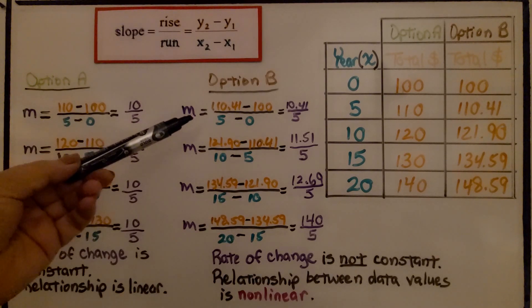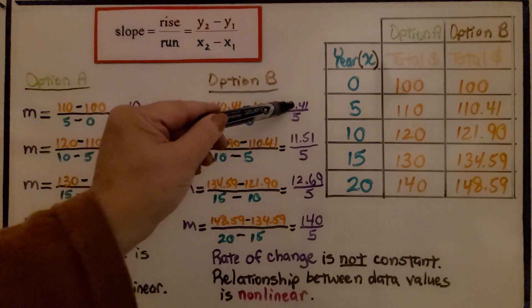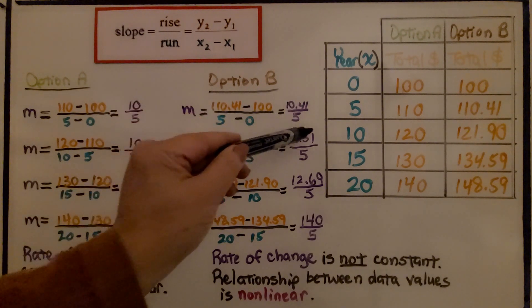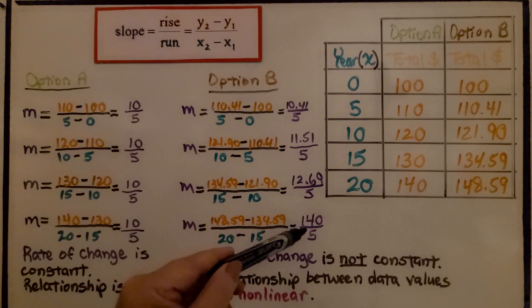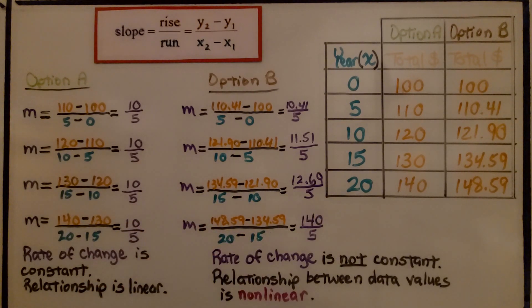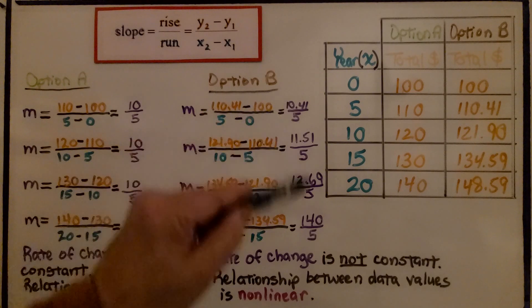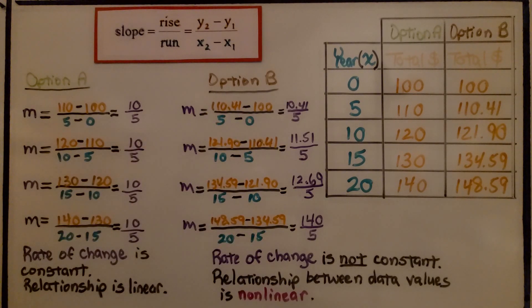But for option B, look, it changes. We have 10.41 over 5, 11.51 over 5, 12.69 over 5, then 14.0 over 5, and the rate of change is not constant. We've got all different numbers for our slope. The relationship between data values is non-linear.